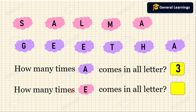Now how many times does E come in all the letters? E is not present in this word. Here E occurs 1, 2 times. So E comes 2 times in all the words.